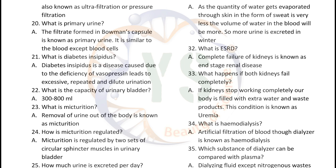What is primary urine? The filtrate formed in Bowman's capsule is known as primary urine. It is similar to blood except for blood cells. What is diabetes insipidus? Diabetes insipidus is a disease caused due to the deficiency of vasopressin hormone, leading to excessive, repeated, and diluted urination.